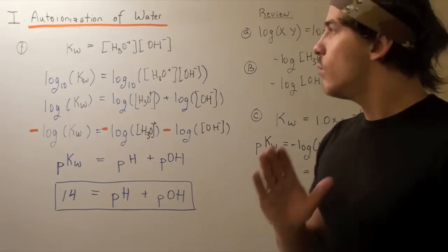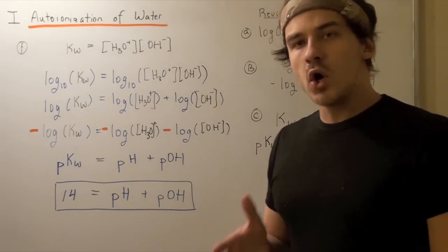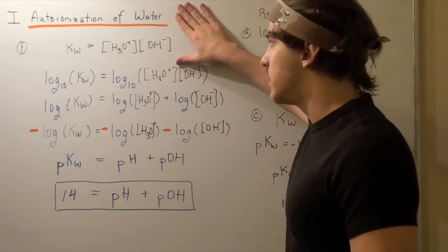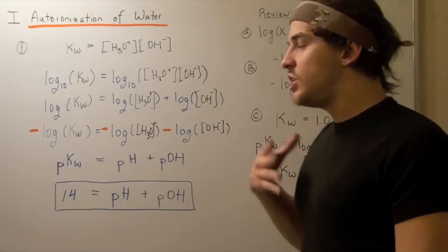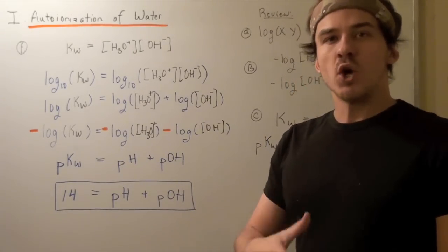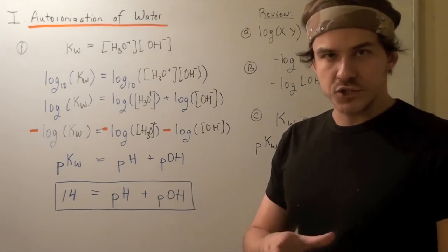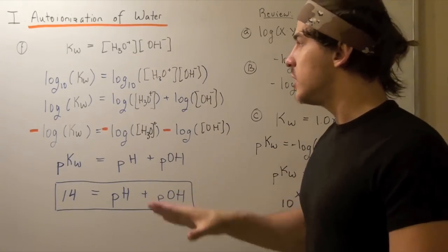In this last step, I want to look at the expression for Kw again. My goal is to take this expression and convert it to this expression. This expression will be convenient when we know the pH and we want to find the pOH, and when we know the pOH and we want to find the pH. So to go from this to this, let's first look at a few things.